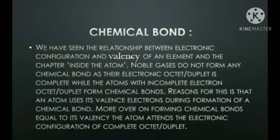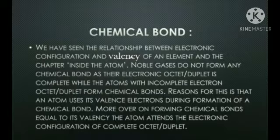We have seen the relationship between electronic configuration and valency of an element in the chapter 'Inside the Atom'. Noble gases do not form any chemical bond as their electron octet or duplet is complete, while atoms with incomplete electron octet or duplet form chemical bonds. An atom uses its valence electrons during formation of a chemical bond — only the last shell electrons take part in the chemical reaction.